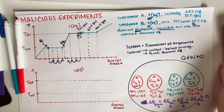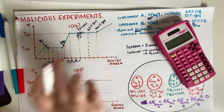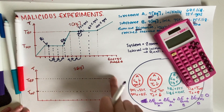Now let's move on to part B. The problem says every grid mark on the axis represents the same value as in the graph from problem one. Sketch as accurately as you can the temperature versus energy graph for two kilograms of kryptonite B, label with an F the final equilibrium state of the two kilograms from problem one, and identify what phase or phases are present. This graph was for one kilogram, so now we need two kilograms.